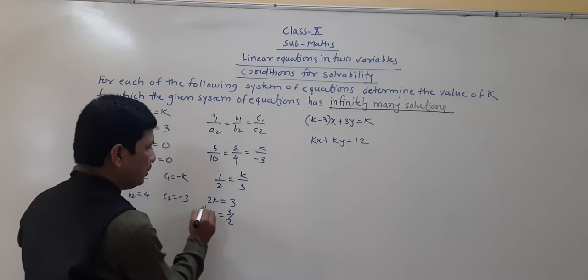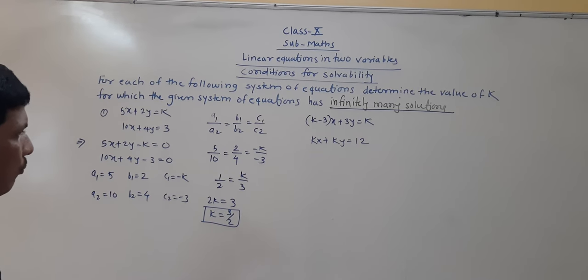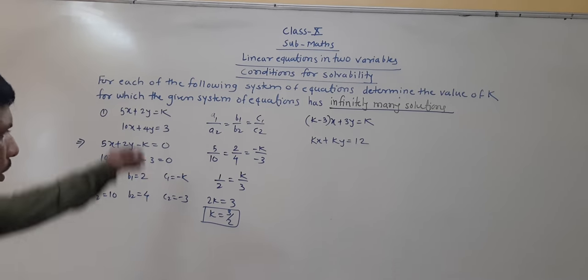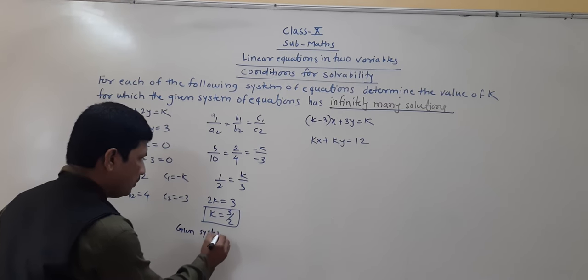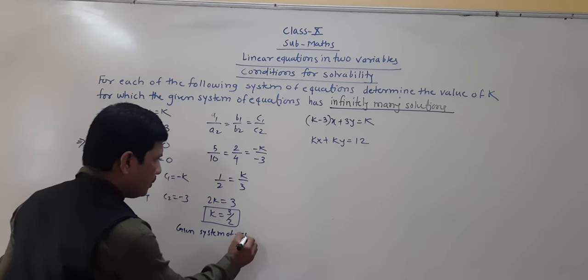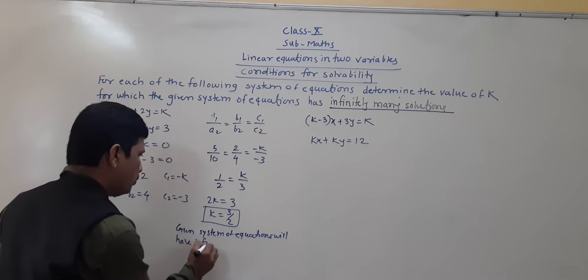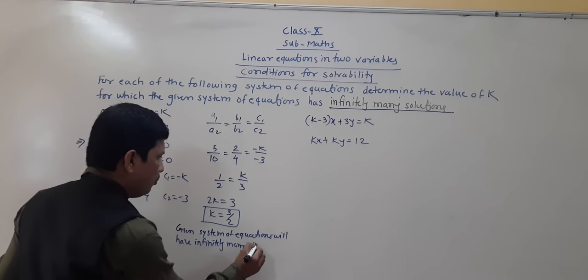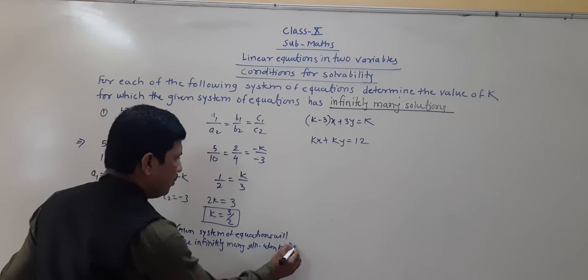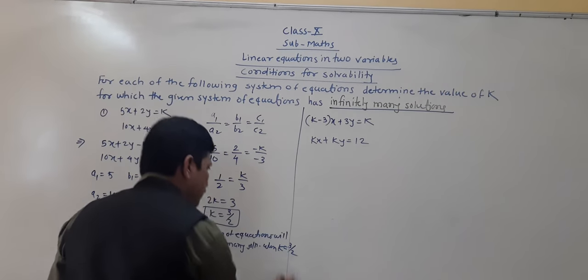We use the ratio: 1 by 2 is equal to 3 by k (simplifying minus 3 by minus k). So 2k is equal to 3, therefore k is equal to 3 by 2. The given system of equations will have infinitely many solutions when k is equal to 3 by 2.